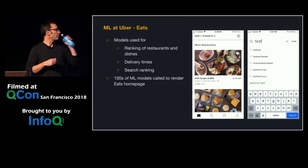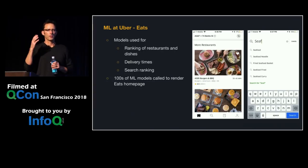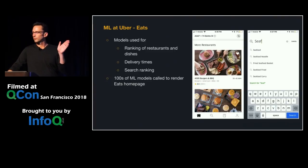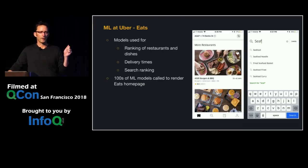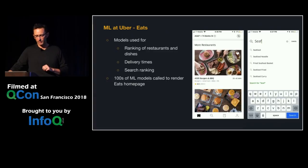With Uber Eats, every time you open the app we score hundreds of different models to generate the homepage for you. We use models to figure out which restaurants you're most likely interested in ordering from, and rank meals to see which ones you're more likely to want. All the delivery times shown below the restaurant are ML models predicting how long it will take from when you place the order through preparation, driver pickup, walking to the restaurant, and driving to your house.